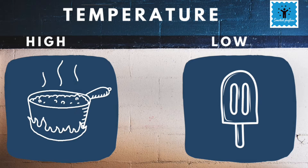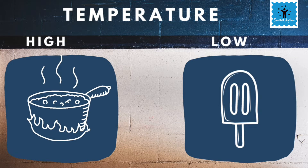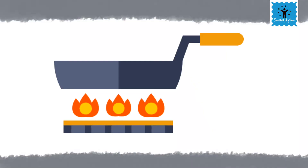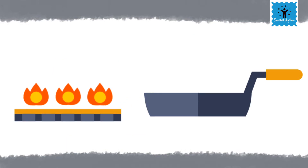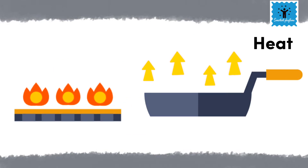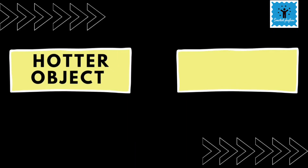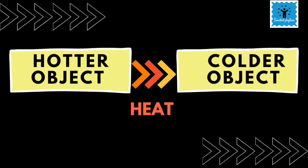When we keep a frying pan on a flame it becomes hot, because heat passes from the flame to the utensil. When the pan is removed from the fire it slowly cools down, because the heat is transferred from the pan to the surroundings. In both cases, heat flows from the hotter object to the colder object.